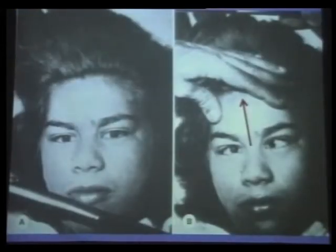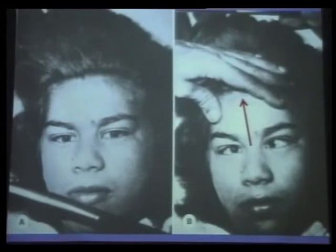Many patients who have supranuclear gaze palsy at the level of the vertical gaze center have lid retraction—it can look like thyroid lid retraction but it's different. Here's another patient who cannot look up, and on attempted upgaze they get a substituted movement: convergence and retraction. That is called convergence-retraction nystagmus, which is not true nystagmus but co-firing of the muscles. That's another sign of the dorsal midbrain syndrome.